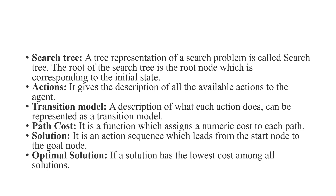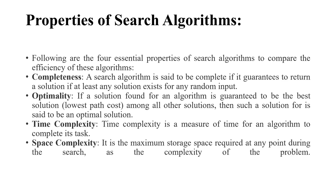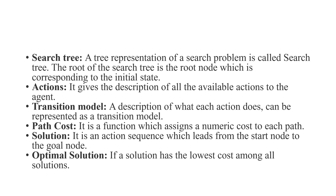Next is search tree. A search tree is a tree representation of the search problem. The root of the search tree is the root node, which corresponds to the initial state. Next, actions give a description of all the available actions to the agent. Then the transition model gives a description of what each action does.